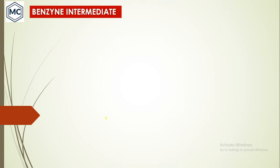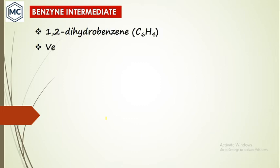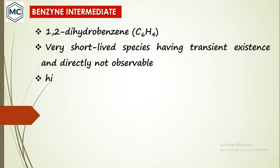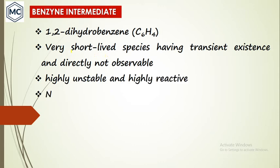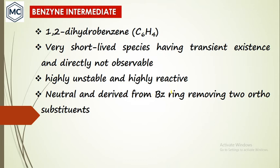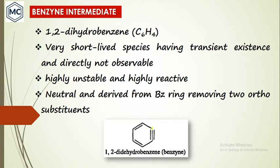That concludes nitrene. Next is the benzyne intermediate. Benzyne is actually 1,2-didehydrobenzene with the formula C₆H₄. Like every intermediate, it is short-lived with transient existence, not directly observable, highly unstable, and highly reactive. Benzyne is a neutral species derived from the benzene ring after removing two ortho substituents.